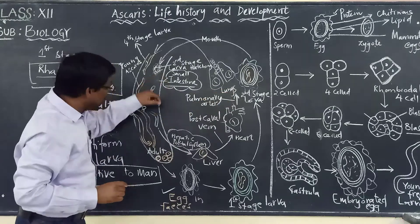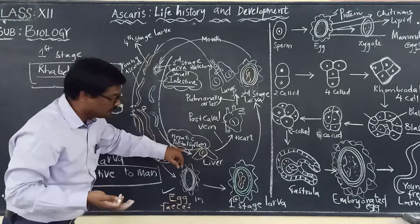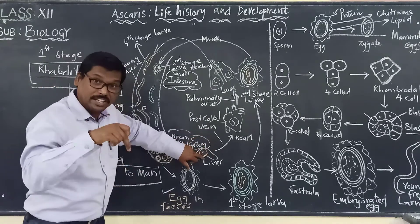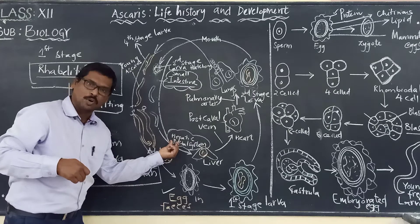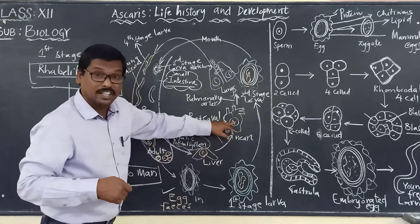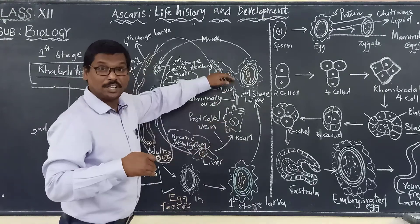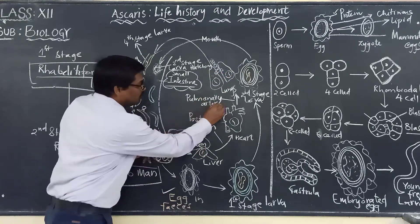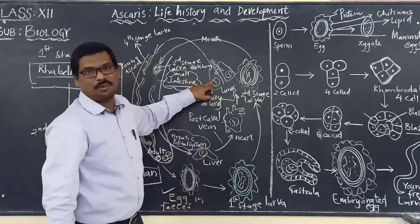From the liver, the larva undergoes further development, then moves into the heart through the post-caval vein. From the heart, it enters the lungs through the pulmonary artery. So the route is: small intestine → liver (via hepatic portal system) → heart (via post-caval vein) → lungs (via pulmonary artery).